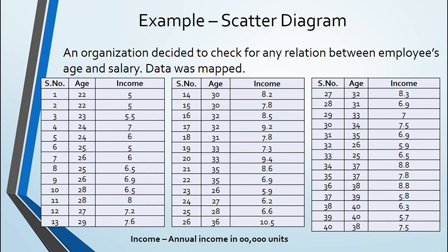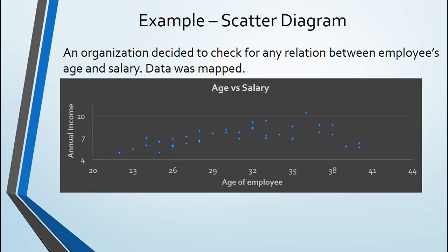A scatter diagram between age as dependent variable and income as independent variable was plotted. It shows that there is weak relation although in positive direction.